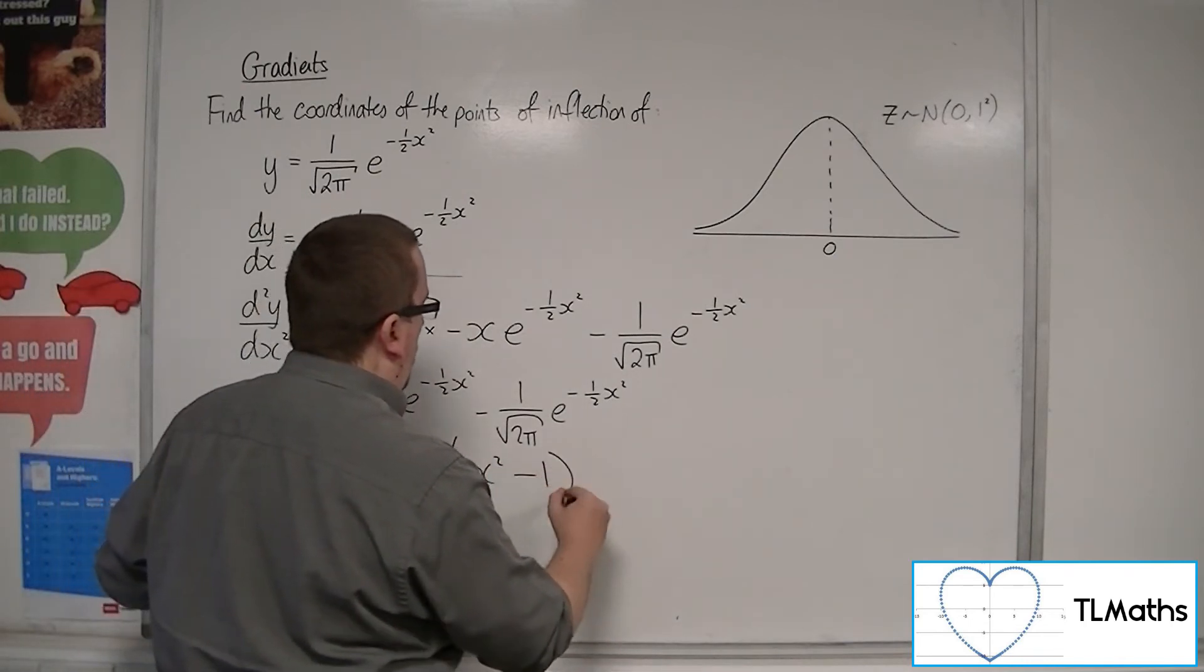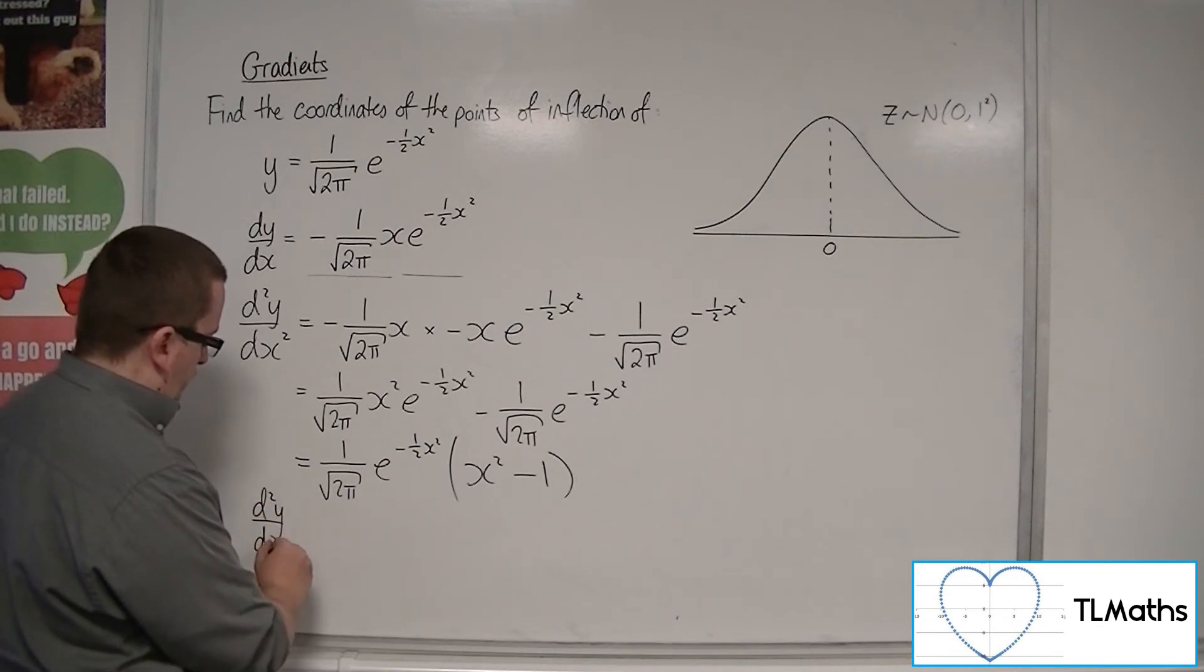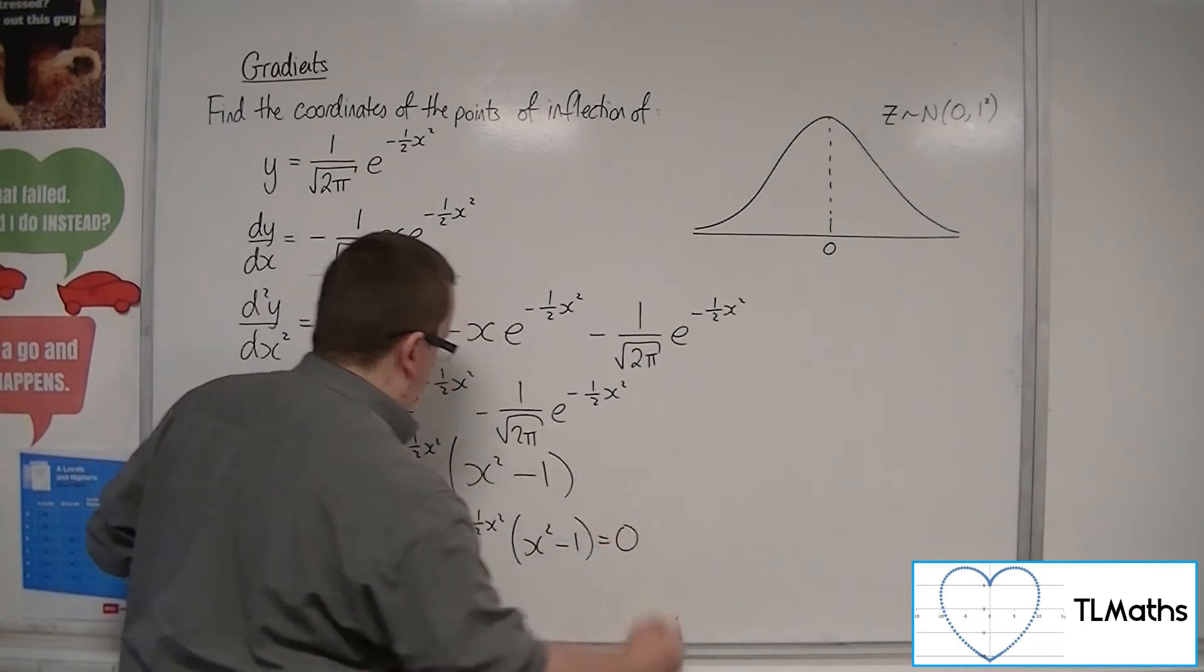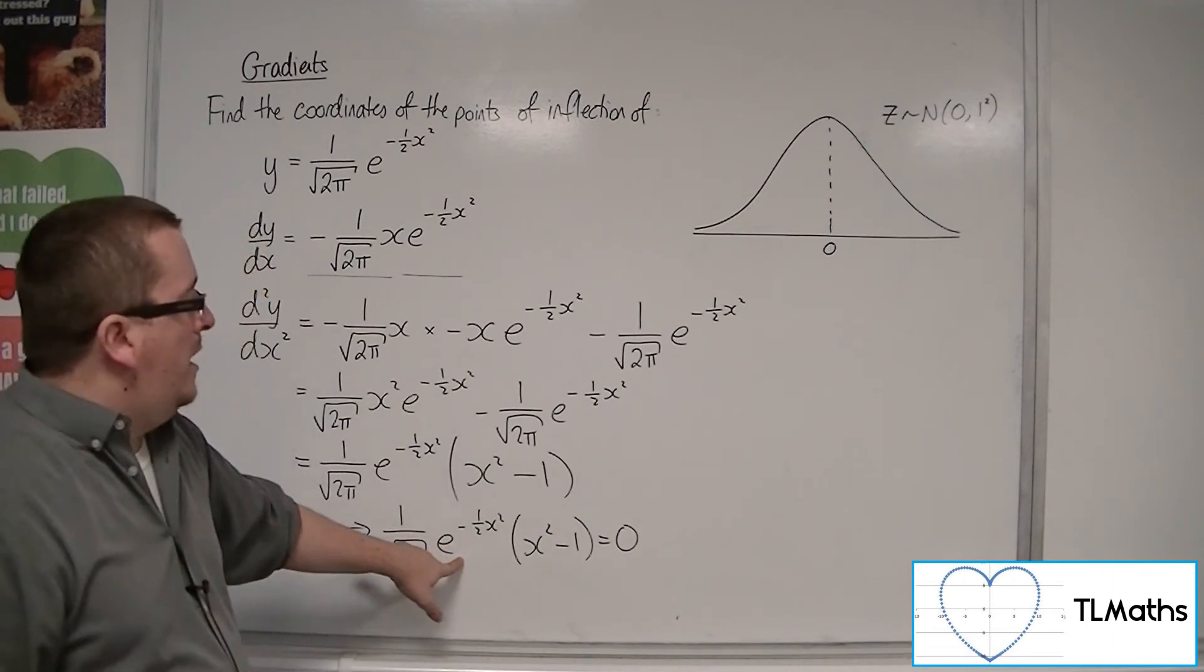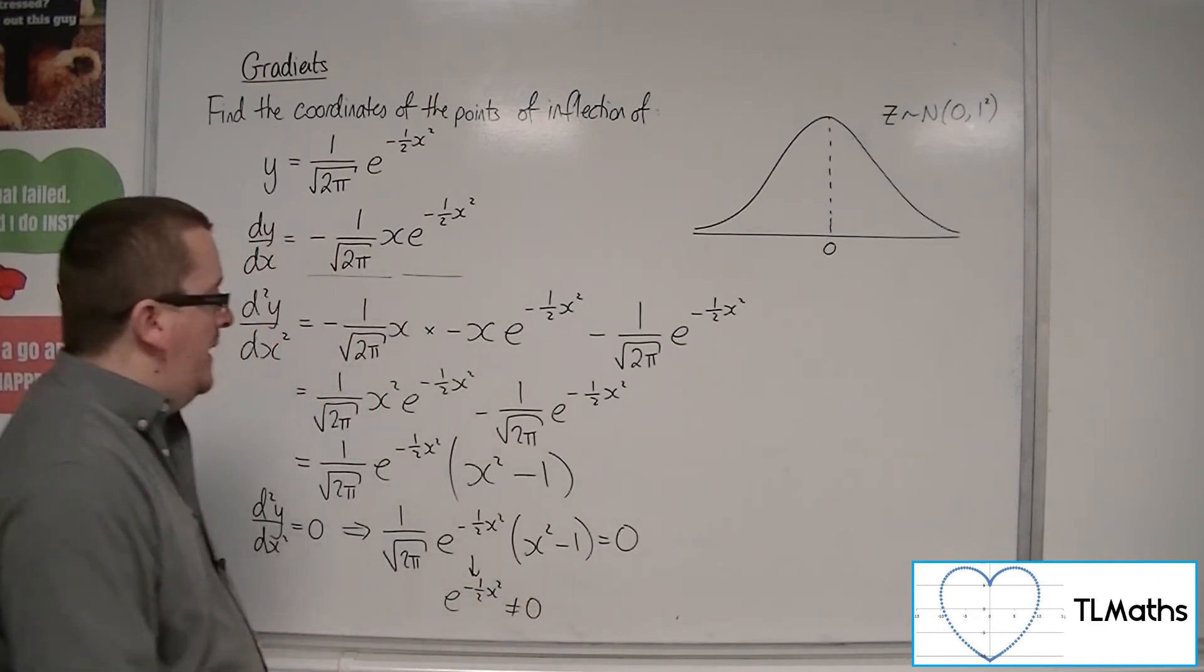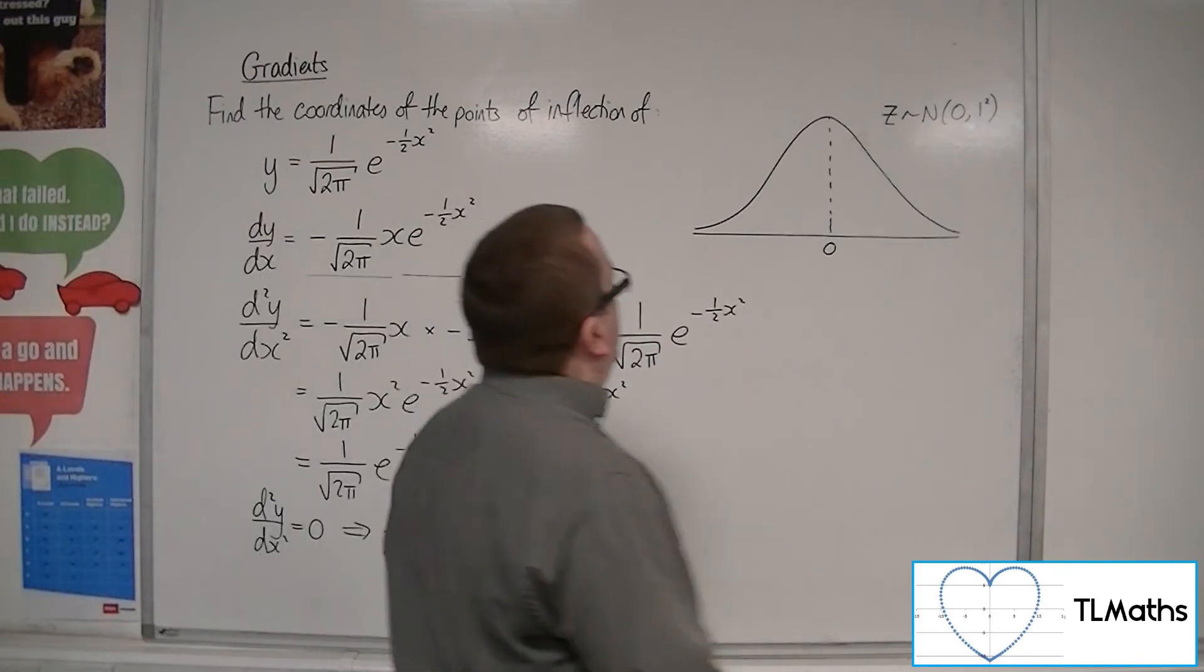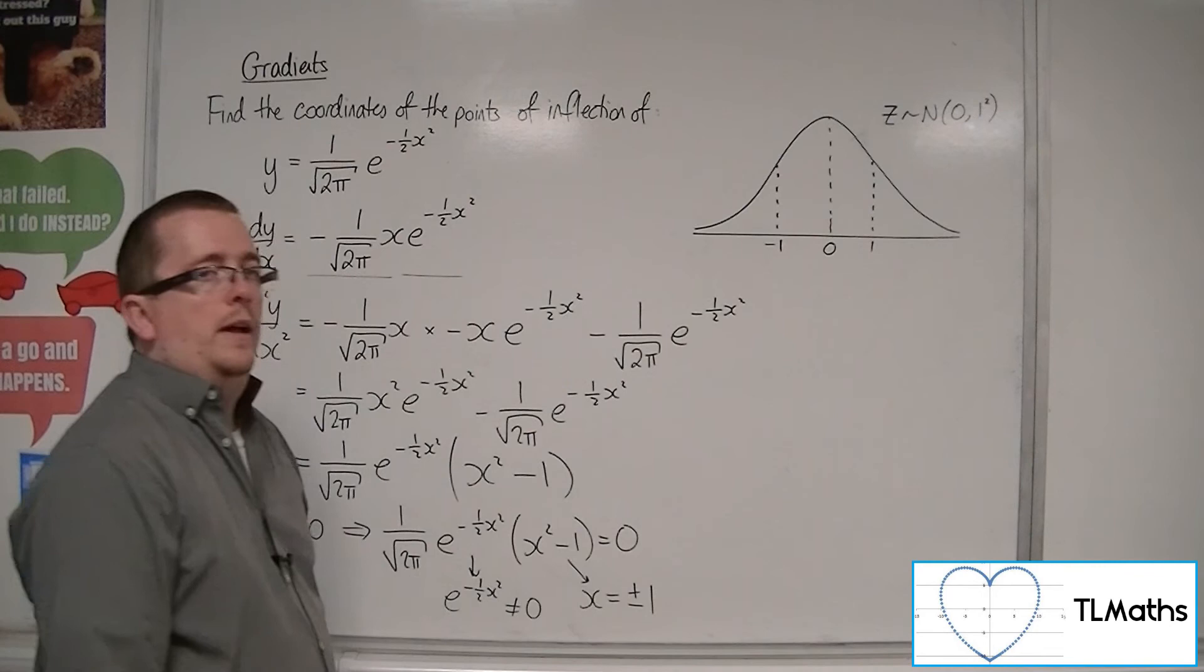Then the second derivative is going to be 0 when this is 0. Now the 1 over root 2π is just a number, so we don't need to worry about that. e^(-1/2 x²) can never be 0. There is no value of x that will make it 0. So the only solutions will come from this bracket being 0. So that means that x is plus or minus 1.